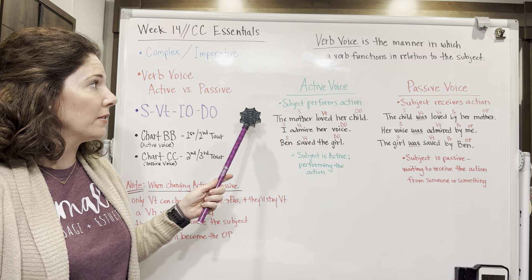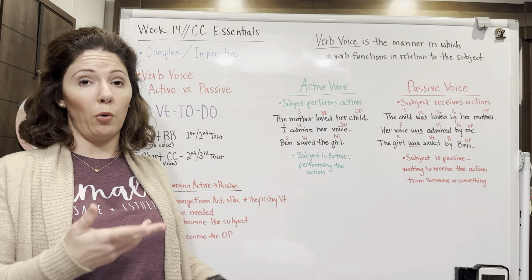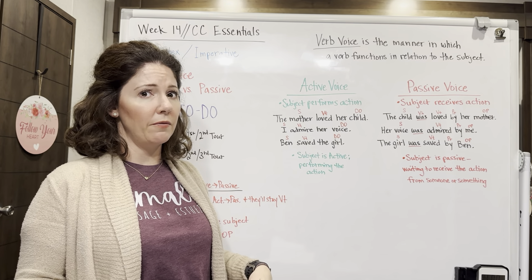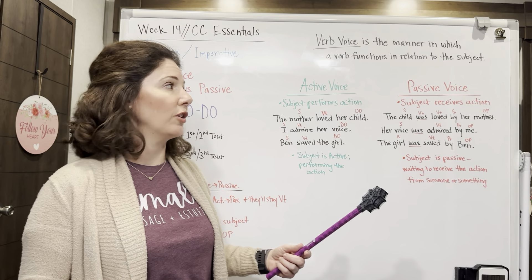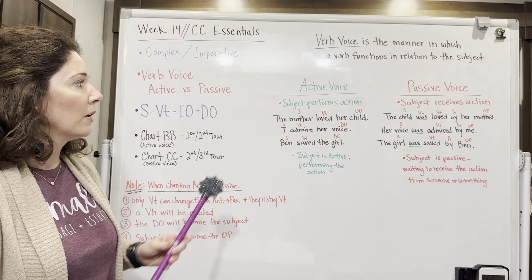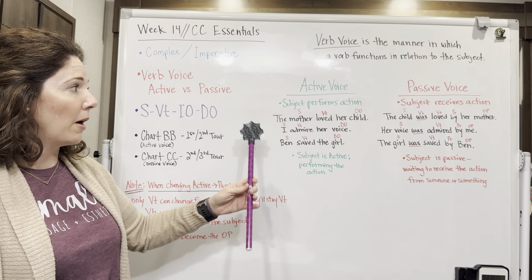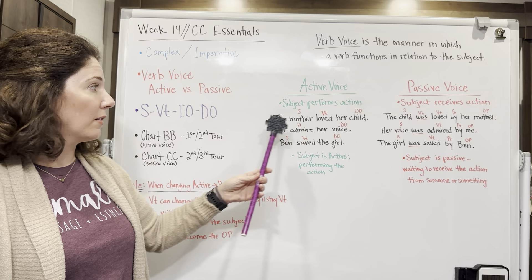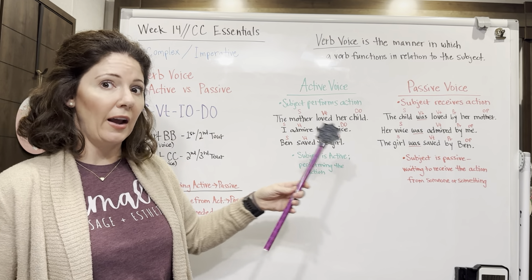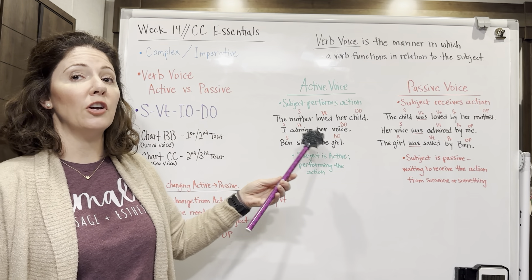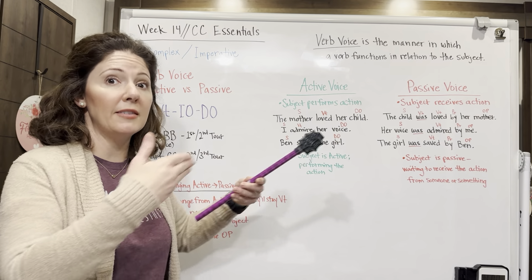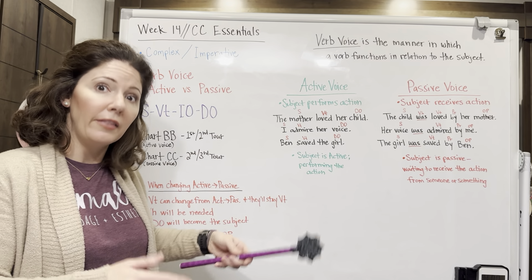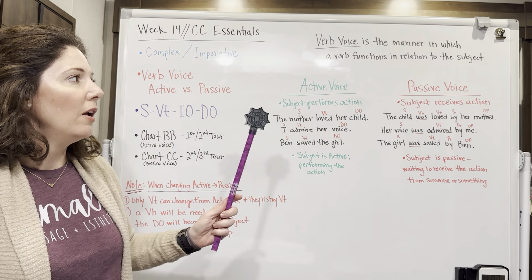With active voice, the subject is active and performs the action — that makes sense. Let's look at some examples: 'The mother loved her child' — the mother is performing the action. 'I admire her voice' — I am performing the action, I am the one admiring. 'Ben saved the girl' — Ben is performing the action. In all of these sentences, the subjects are the ones actively performing the action.